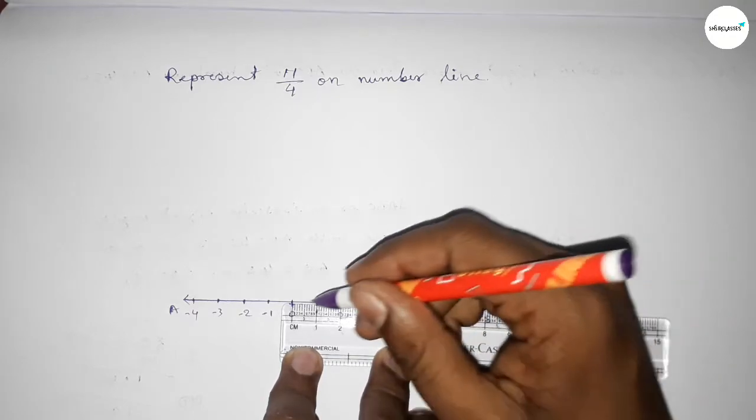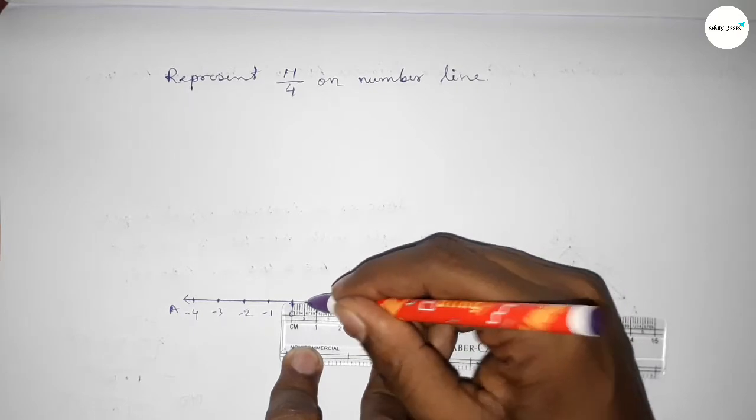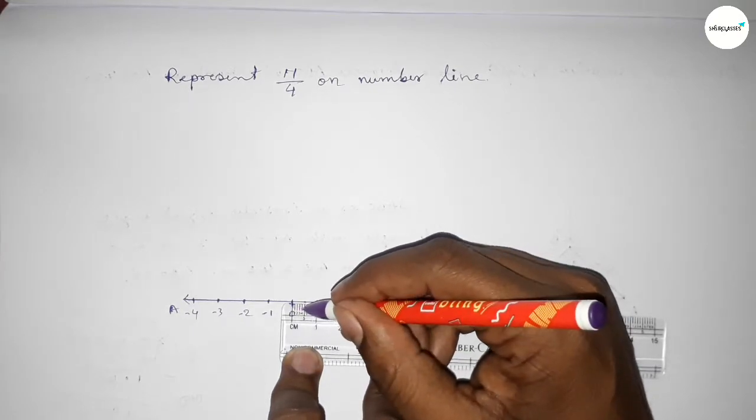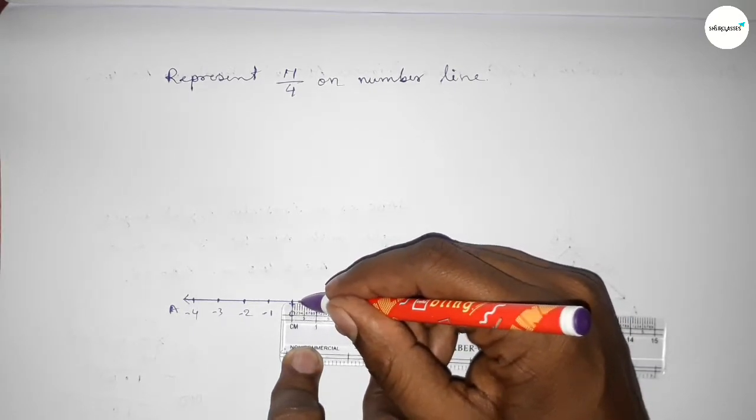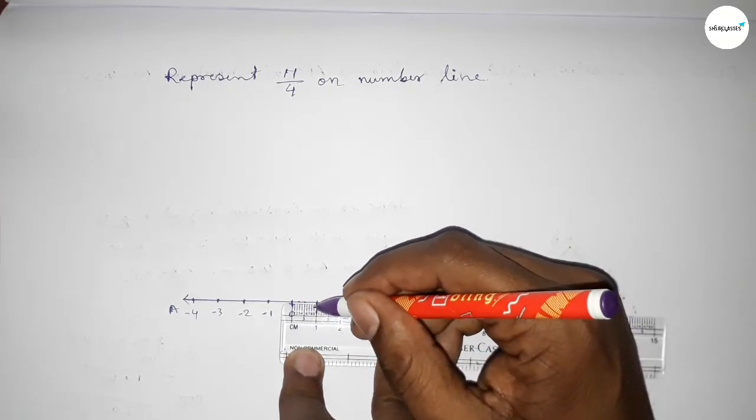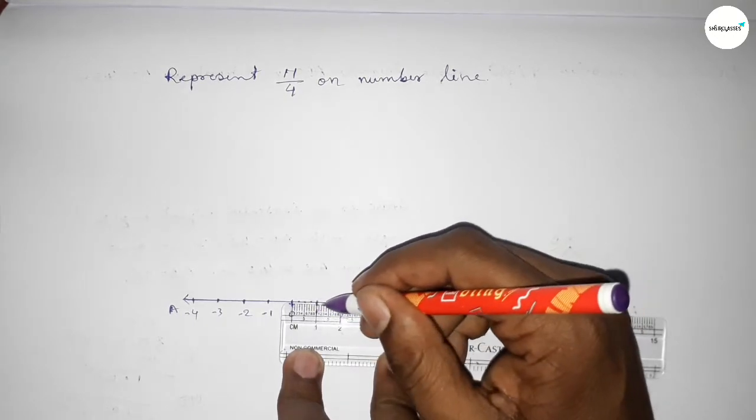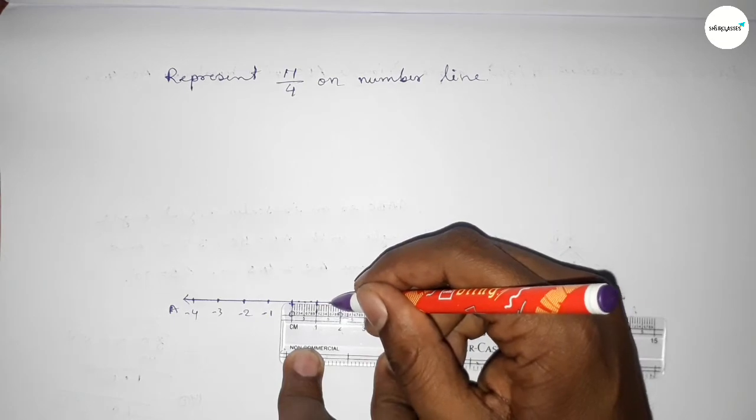First taking the half between 0 to 1, so this is half. Then dividing the distance between 0 to 0.5, so this is 0.25 approximately. Similarly, 0.5 to 1, so this is 0.75 approximately. Similarly, divide the distance between 1 to 2.